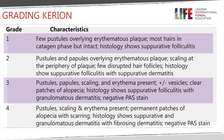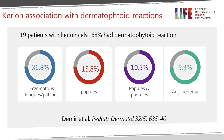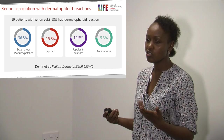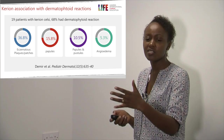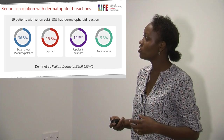Dermatophytoid reactions are often associated with kerion. In a series of 19 patients reported in the Journal of Pediatric Dermatology by Damir and colleagues, about 68 percent had a dermatophytoid reaction. The majority had eczematous plaques and patches — about a third of patients — while 15.8 percent had only papules with no pustules or patches, about 10 percent had a mixture of papules and pustules, and a fraction had angioedema. When you see a patient with a kerion, look for these signs of dermatophytoid reaction, as they indicate a very vigorous immune response to the fungal antigens.